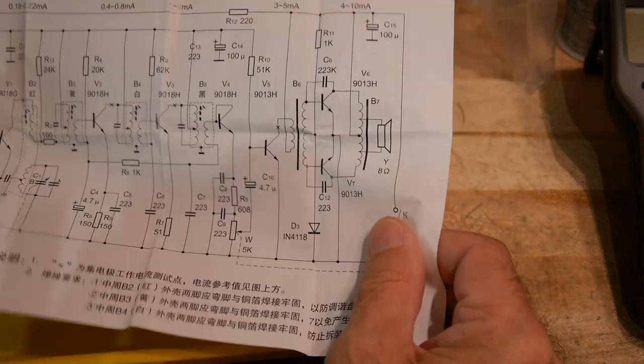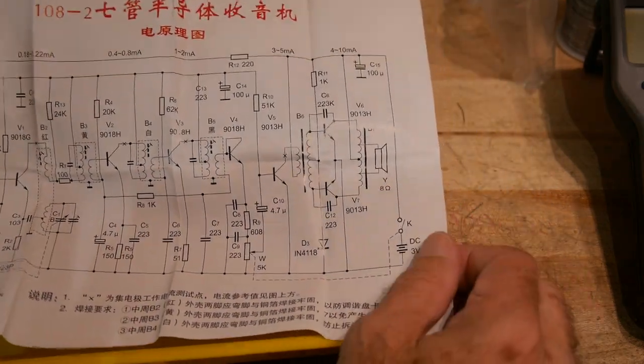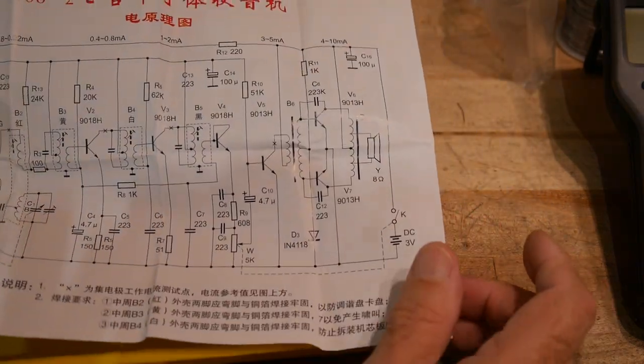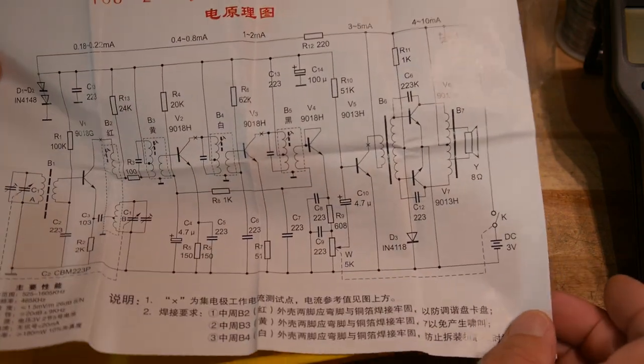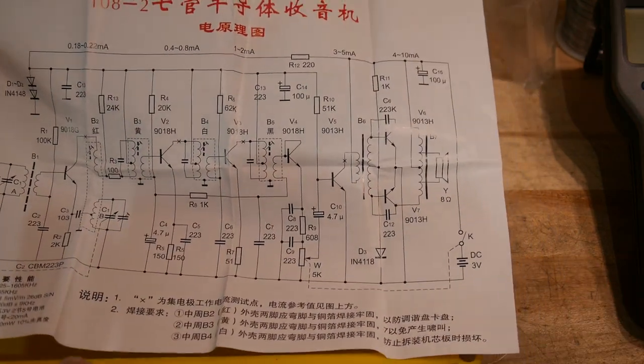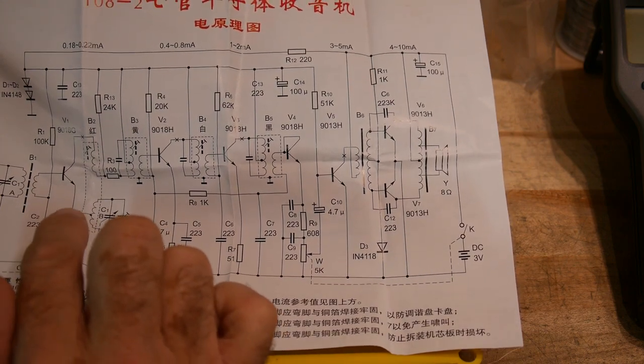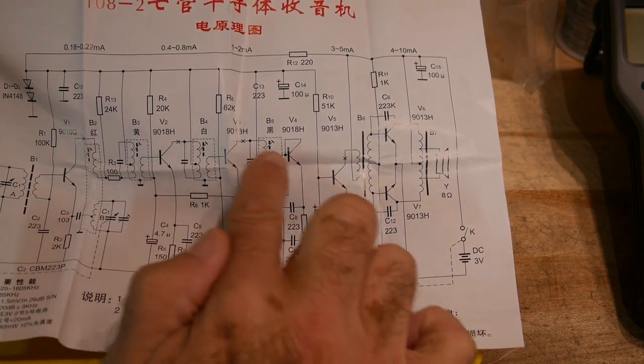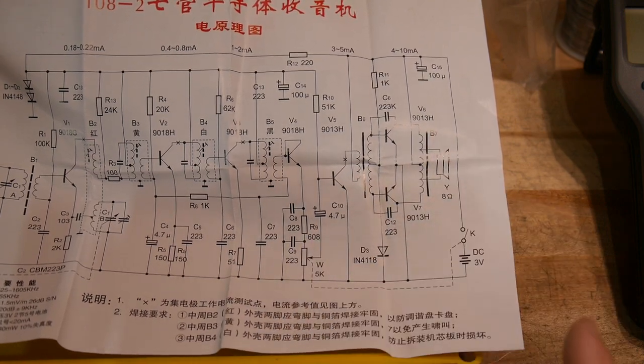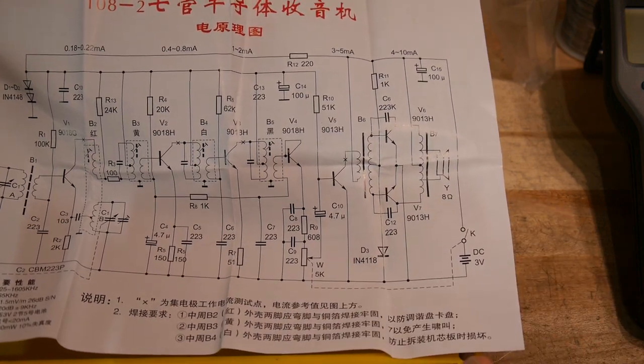Looks like an AM radio. It looks like it has a ferrite antenna. Let's take a look at the schematic. We don't need to be able to read Chinese for this. So one, two, three, four, five, six, seven, seven transistor radio.